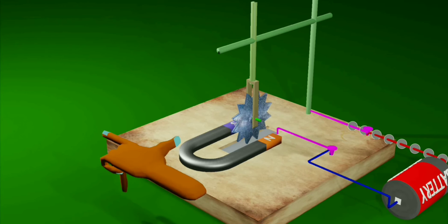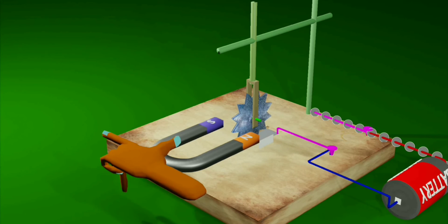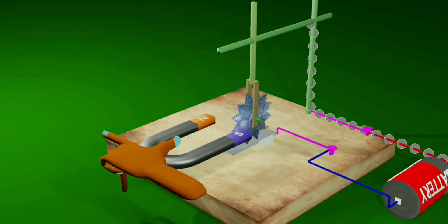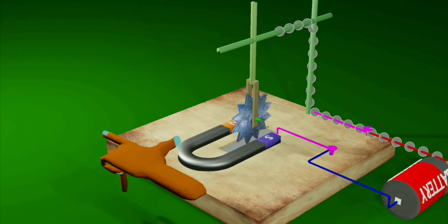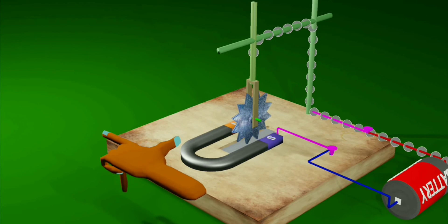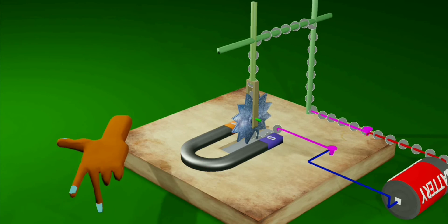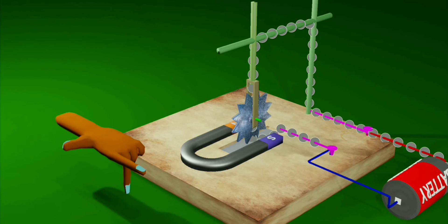If the poles of the magnet are interchanged, observe the effect on the movement of the wheel. Magnetic poles are interchanged by simply lifting and rotating the magnet. The left hand is adjusted to show proper directions of the magnetic field and the electric current.